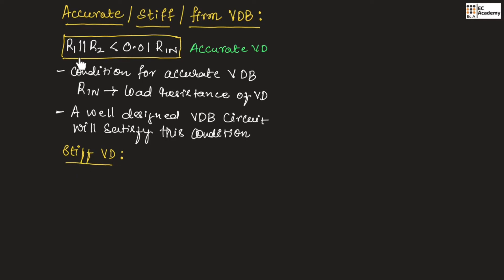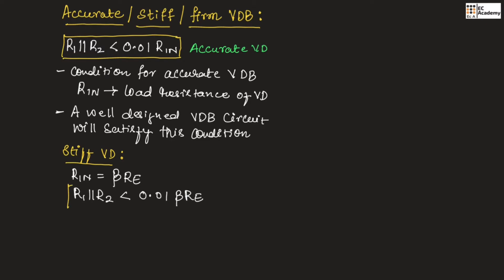In the first equation, we have considered R1 parallel with R2 should be less than 0.01 RIN. For calculating RIN, we can use the formula RIN equals beta times RE. If we substitute this formula in the first equation, we get R1 parallel with R2 should be less than 0.01 beta RE. This is the condition for stiff voltage divider.